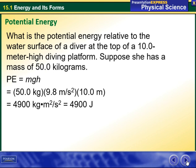Let's take this example. What is the potential energy relative to the water surface of a diver at the top of a 10-meter high diving platform? Suppose she has a mass of 50 kilograms. So potential energy equals mass times the acceleration due to gravity times the height. So her mass is 50 kilograms, g is constant always going to be given to you, 9.8 meters per second squared, and the height is 10 meters. So once we put them all together in the calculator and multiply them all together, we have the answer of 4900 joules.